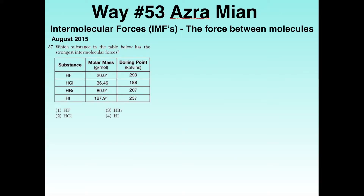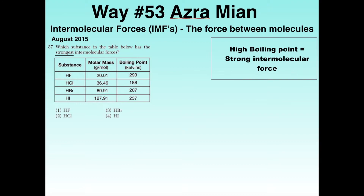If we take a look at the August 2015 Regents, we can see it asks us which substance in the table below has the strongest intermolecular forces. We know that a high boiling point leads to strong intermolecular forces. So if we look at the boiling points of these elements, we see that the highest boiling point is 293, which is HF, making the answer choice 1.